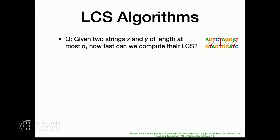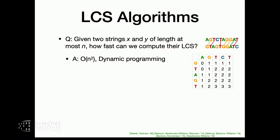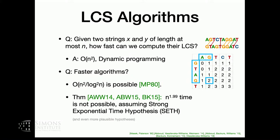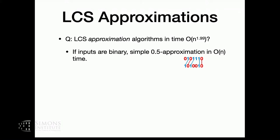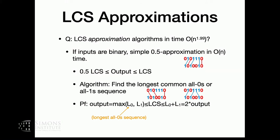You can compute the LCS of two strings in O(n²) time using dynamic programming if they're length n. You can ask, are there faster algorithms? Results in fine-grained complexity say that if you want truly sub-quadratic time, you can't do this assuming plausible fine-grained complexity hypotheses. So you can't do substantially better than quadratic time. You could ask, can you get faster approximation algorithms? If you are doing LCS for two binary strings, there is a simple one-half approximation in linear time — you just count the number of zeros and ones.